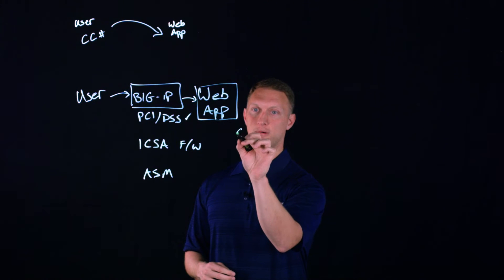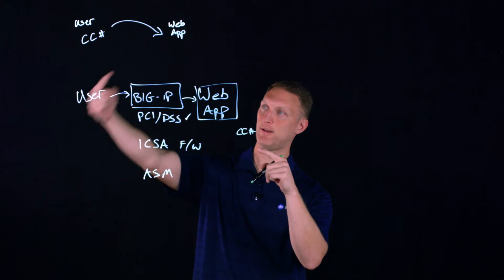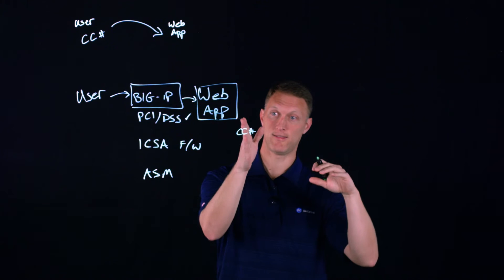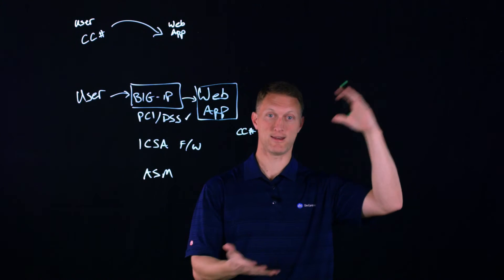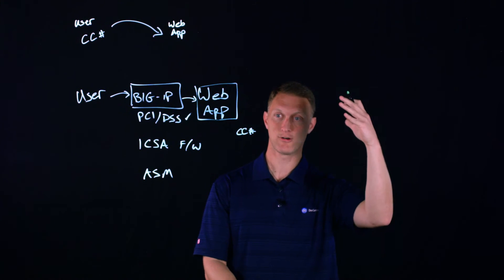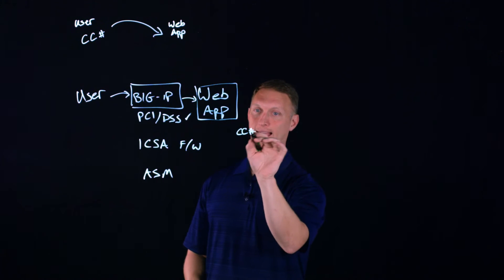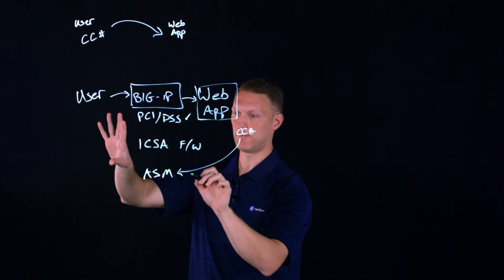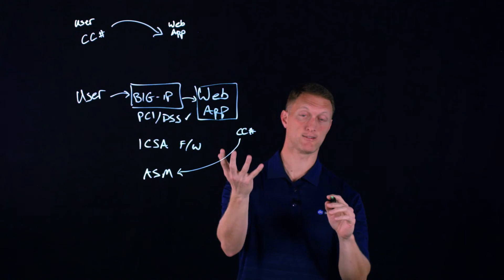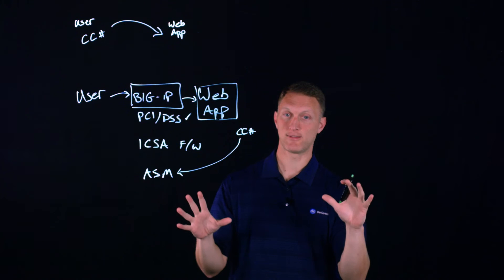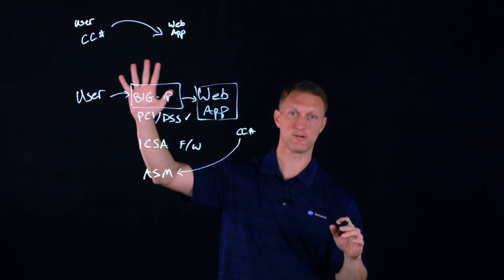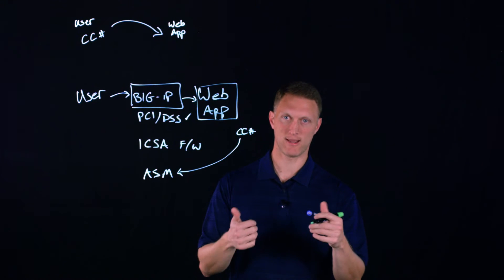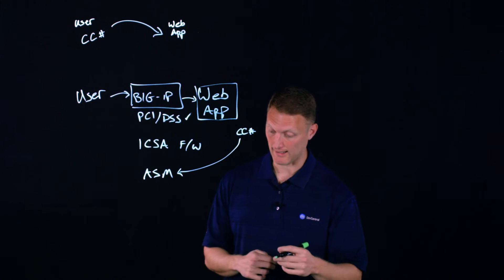So if there's a credit card number, so that let's say that there's a credit card number that was put in by the user and now this web application, they have your credit card and then they're going to display, here's your receipt or here's the page that confirms your purchase. As that credit card number in that page comes back to the user, it's going to run through the ASM and the ASM is going to recognize that that's a credit card and it's going to block that credit card number from displaying on the screen of the user. And so that's one way that you can protect the card data.